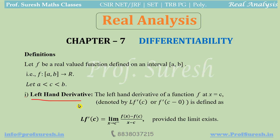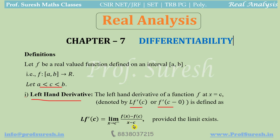The first definition is the left-hand derivative. The left-hand derivative of function f at x equal to c is defined as the left-hand limit: limit as x tends to c minus of f(x) minus f(c) divided by x minus c.